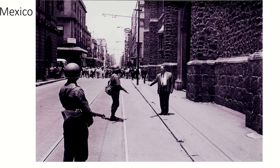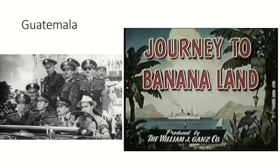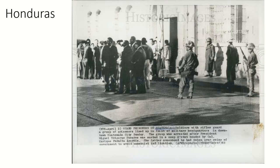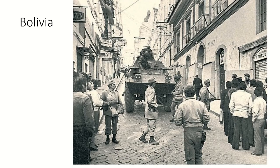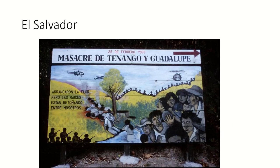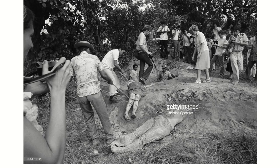In Mexico, the U.S. assisted as the government cracked down on student protesters. In Haiti, strongman dictator Papa Doc François Duvalier was backed by the United States, as was the military dictatorship in Guatemala, which worked with United Fruit and other U.S. businesses. In Honduras, U.S. economic interests bled into political interests. In Panama, the United States put in its own soldiers to ensure the outcome of a potential civil war. They supported a coup in Bolivia, and supported the government in El Salvador during the Salvadoran Civil War. Notably, several nuns and Jesuit priests were killed by government forces, their bodies buried in shallow graves, shining light on the Salvadoran situation.